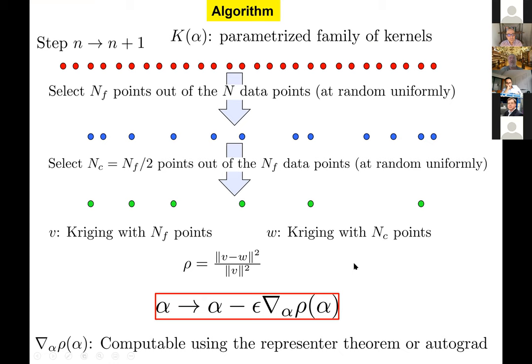In kernel flow: interpolate all N data points with kernel K and call the interpolant v; interpolate half of those points with the same kernel K and call it w; define rho as the relative error between v and w measured in the RKHS norm. A kernel is good if this cross-validation loss rho is small. Given a family of kernels parameterized by alpha, select a random batch, select a random sub-batch, compute v and w, and evolve alpha by gradient descent on rho. Then iterate. It is a very simple algorithm.